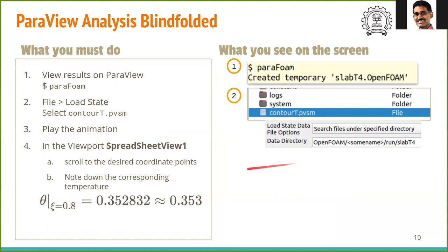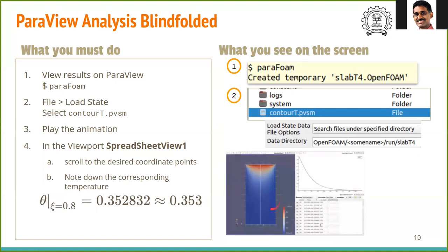Following this, you should see three viewports. One for the temperature profile. Two for the temperature variation in the vertical direction and three for the spreadsheet output of the temperature profile. Use play button to view the animation. You can see how the temperature changes from the initial condition to the steady state.